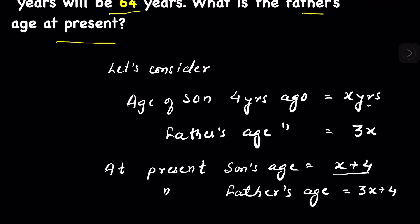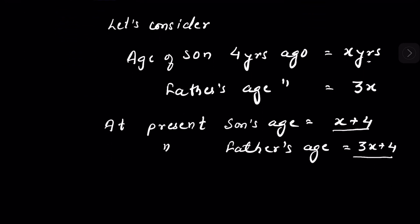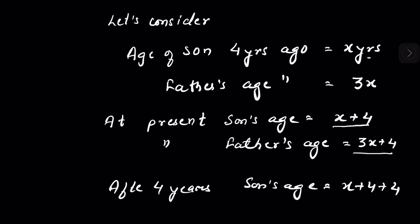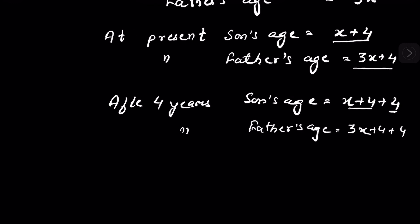So the present age of the son is x plus four, and the present age of the father is three x plus four. The question says the total of the ages of the father and the son after four years will be 64 years. So after four years, the son's age will be x plus four plus four, and the father's age will be three x plus four plus four.